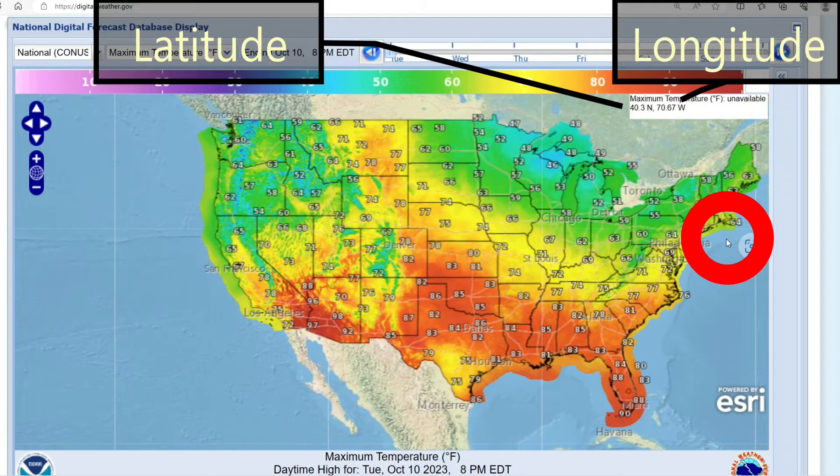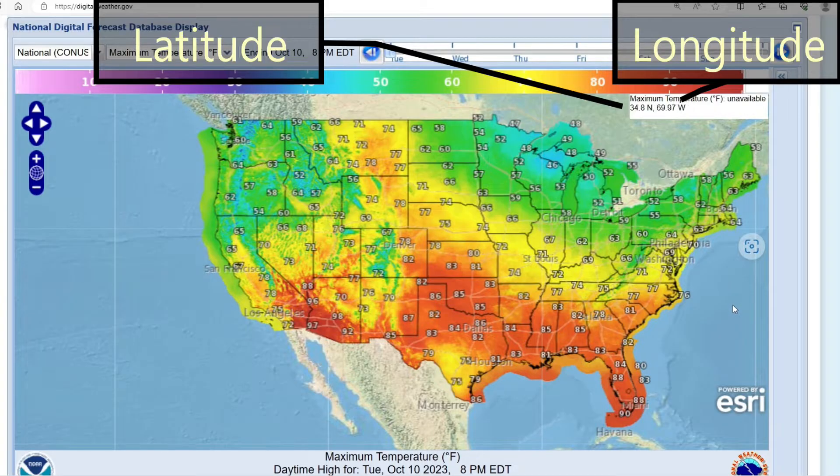In contrast, if we move the mouse's pointer close to a line of longitude, then we see that the value of the longitude stays about the same with the latitude's value changes.